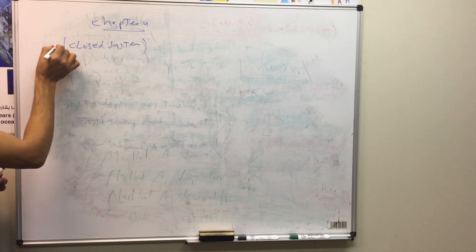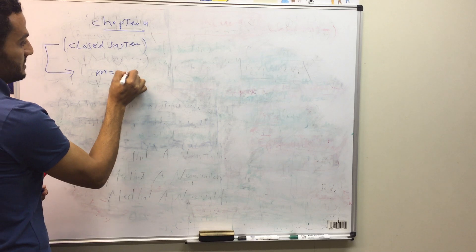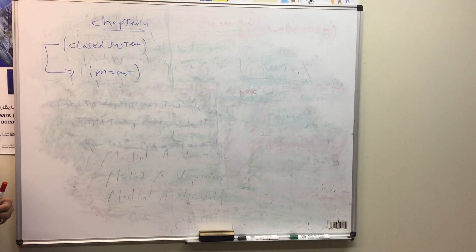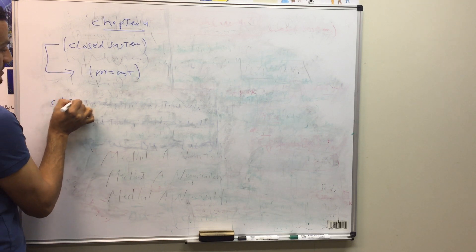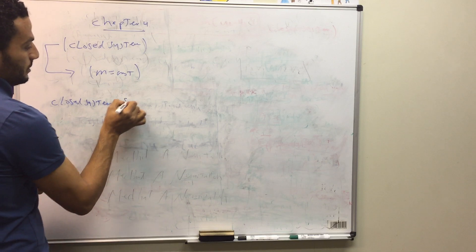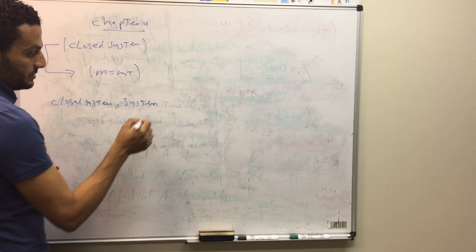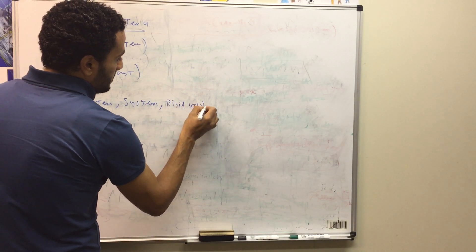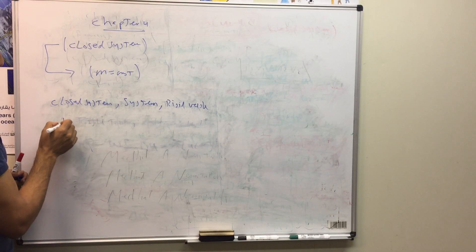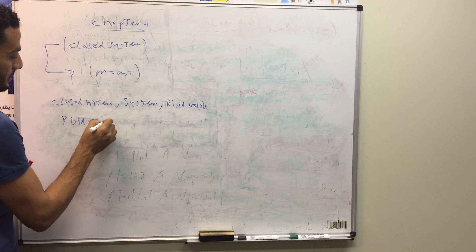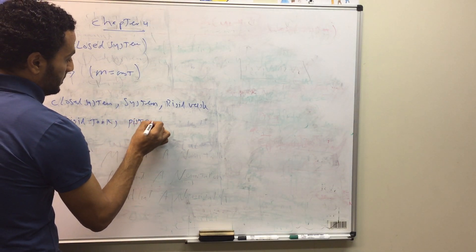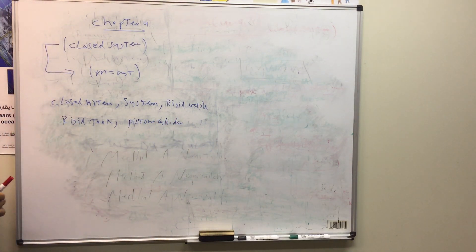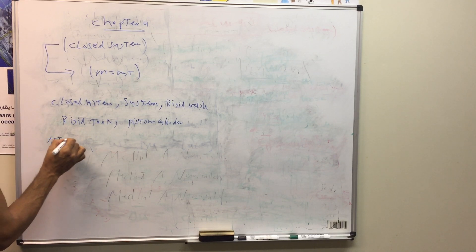A closed system does not allow for mass transfer, so the mass of the system is considered constant. How do we define a closed system? When a problem directly states 'closed system,' or simply says 'a system,' or mentions a rigid vessel or a rigid tank — all of these mean the system is closed. Also, a piston-cylinder device containing a working fluid like gas, steam, or any other working fluid is also a closed system, with no mass transfer.